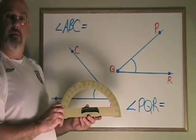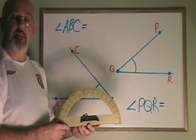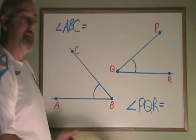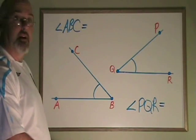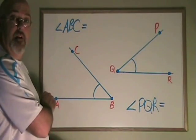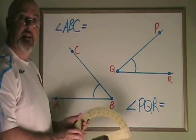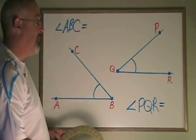But there is a reason why there are two sets of numbers on a protractor. And that reason has to do with whether we are measuring an angle that opens to the left or one that opens to the right. Let's try measuring these angles and see how this works.